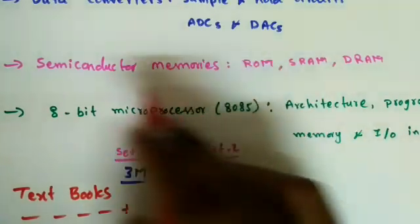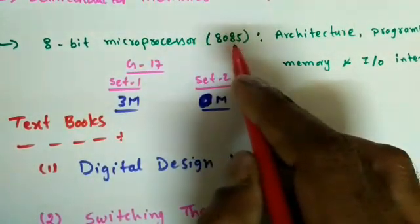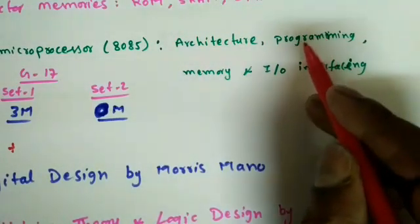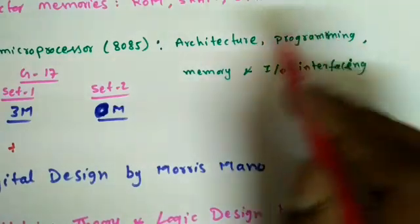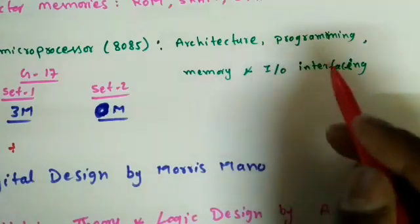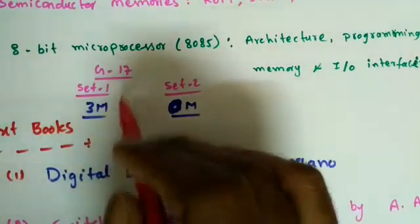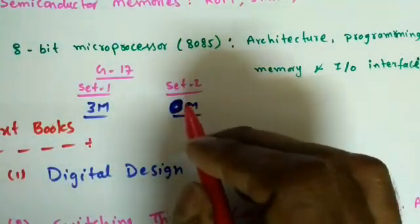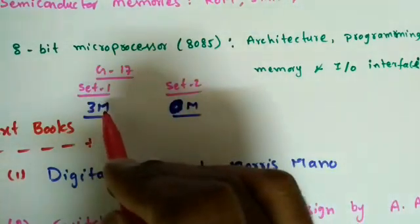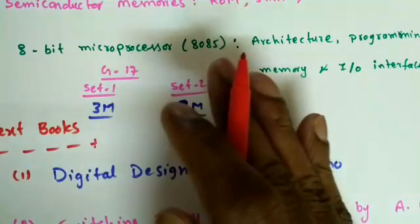Then we discuss the 8085 microprocessor — its architecture, pin details, and how to write programs for operations like addition, multiplication, move, and shift. We also cover how to interface memory and I/O ports with different peripherals. In GATE 2017, Set 1 had three marks from microprocessors; Set 2 had none, but generally at least one question comes from this topic.